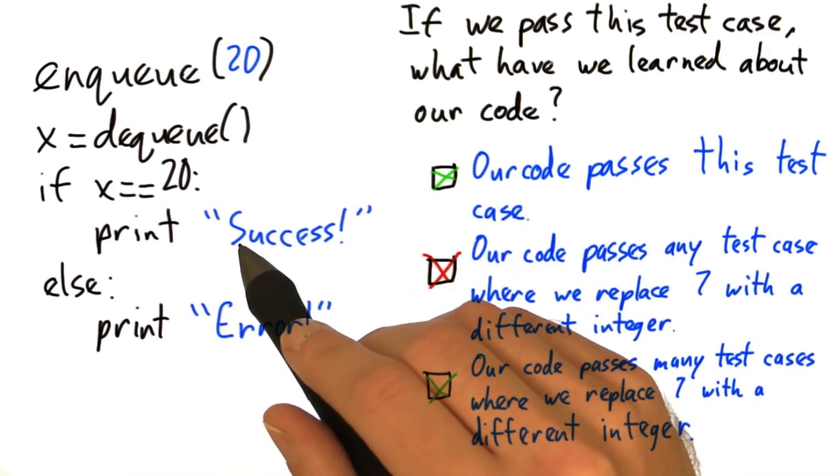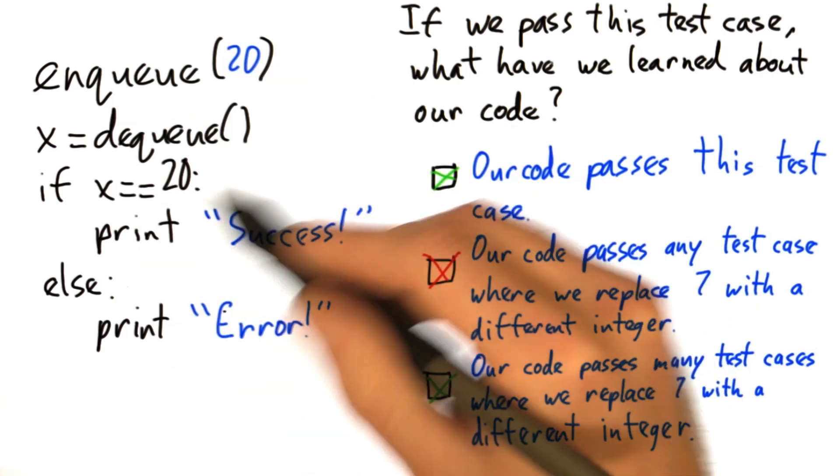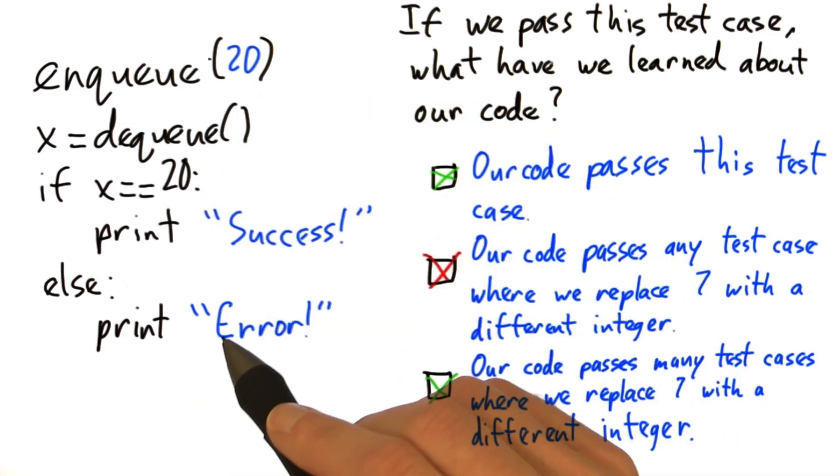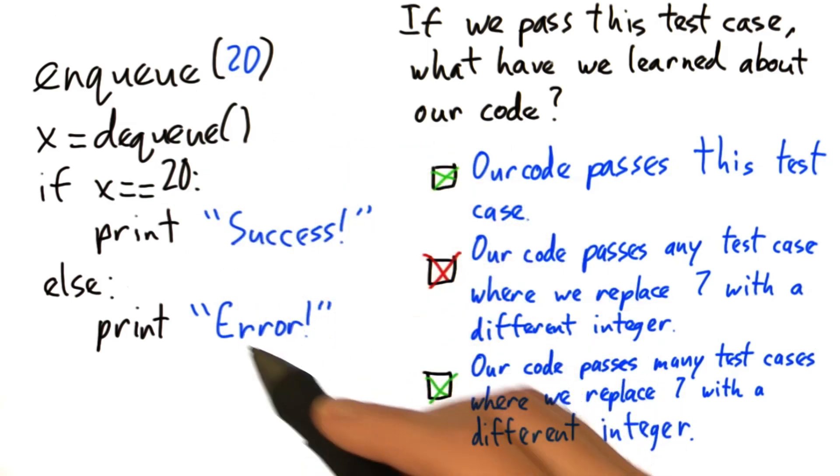So the question is what exactly do we learn and how do we make test cases that represent a large number of other potential test cases, so we don't have to write a whole lot of very small, simple test cases.